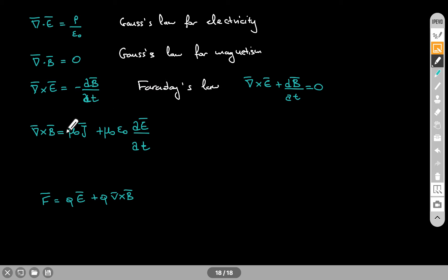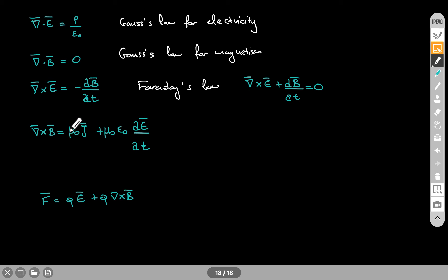The curl of the magnetic field is equal to mu naught times the current density. This is Ampere's law. We have used it in the form where the path integral of B dot dL is equal to mu naught times the current enclosed. In integral form, you have the closed path integral of B dot dL is equal to mu naught times the current enclosed.